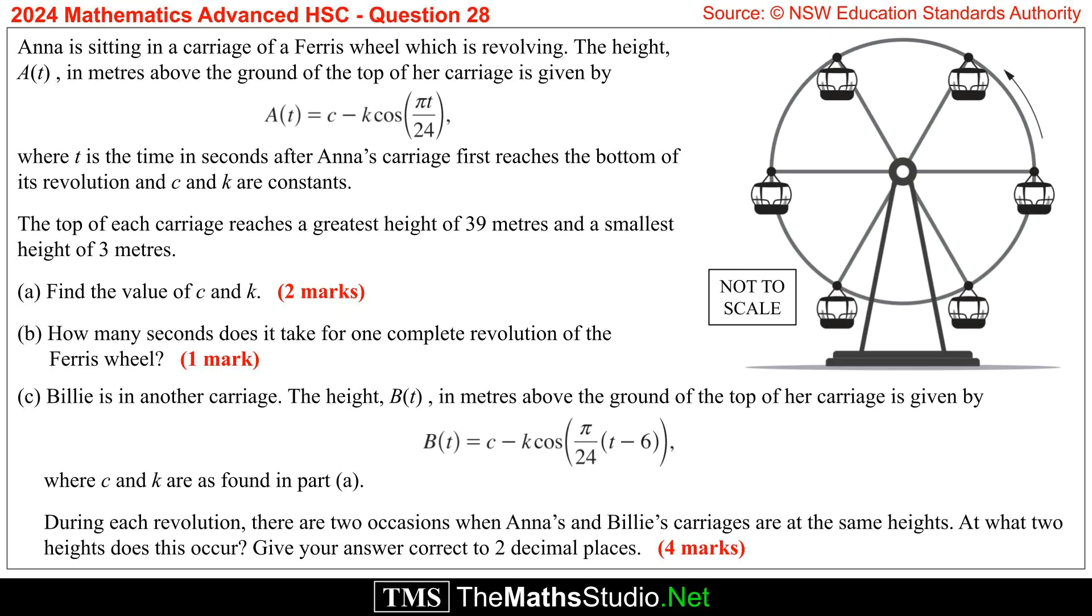Question 28. Anna is sitting in a carriage of a ferris wheel which is revolving. The height, A(t), in metres above the ground of the top of her carriage is given by A(t) equals c minus k times cos(πt/24), where t is the time in seconds after Anna's carriage first reaches the bottom of its revolution and c and k are constants.